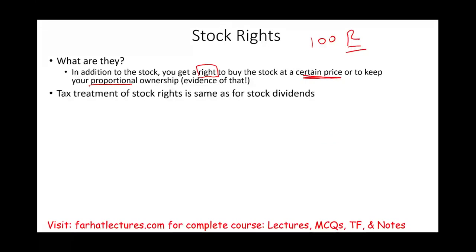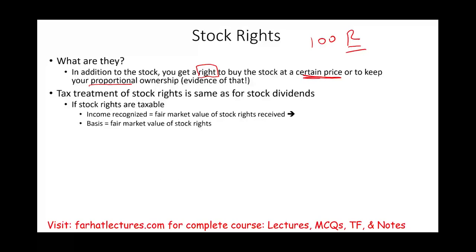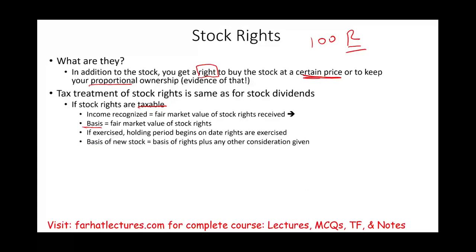The tax treatment of stock rights is the same as stock dividends — sometimes taxable, sometimes not. If stock rights are taxable, income is recognized based on the fair market value of the rights received. That fair market value becomes your basis since you are taxed on it. If the rights are exercised — meaning you use the right to buy stock — the holding period begins on the date the rights are exercised. The basis of the new stock equals the basis of the rights plus the amount paid for the stock.